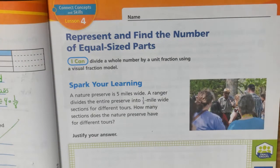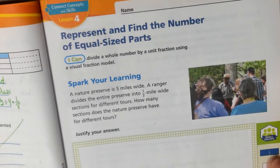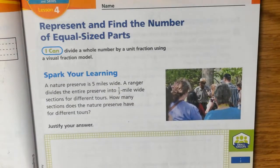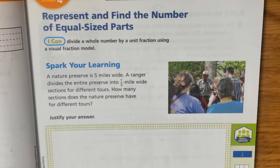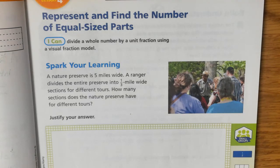Hello, fifth grade. We are going to be working on lesson four, module 10, lesson four, which is represent and find the number of equal-sized parts. Last time we were taking a fraction and dividing it by a whole number. This time we're taking a whole number and dividing it by a fraction — dividing it by a unit fraction. You'll be able to divide a whole number by a unit fraction using a visual model, fraction model.